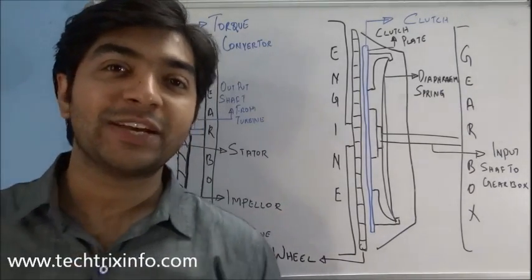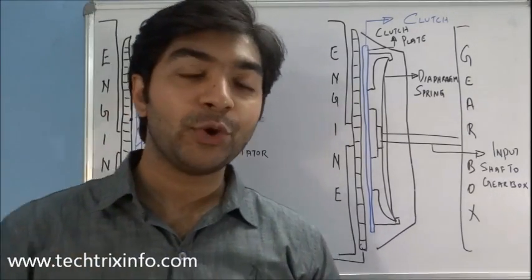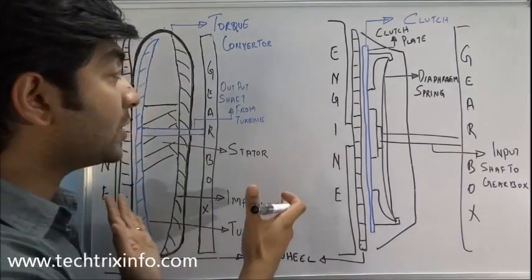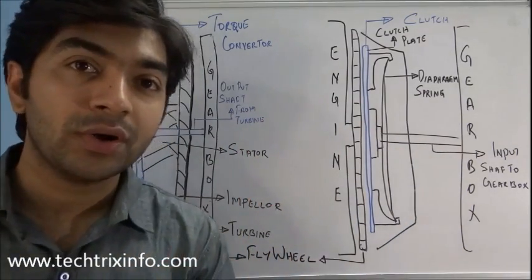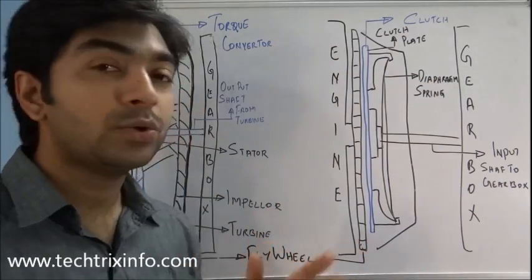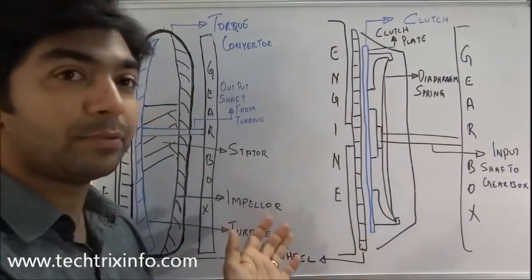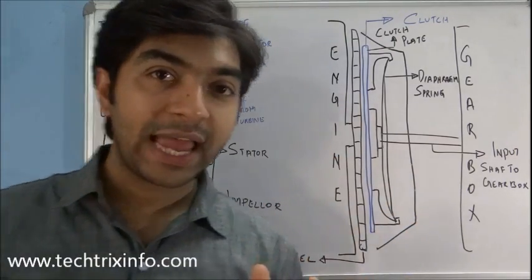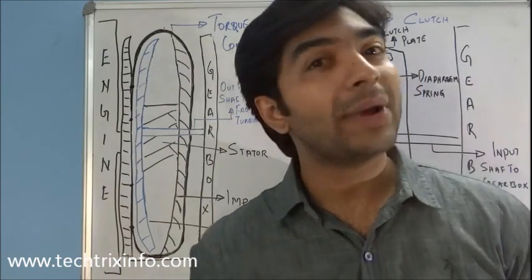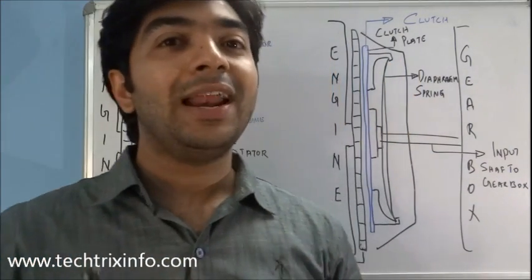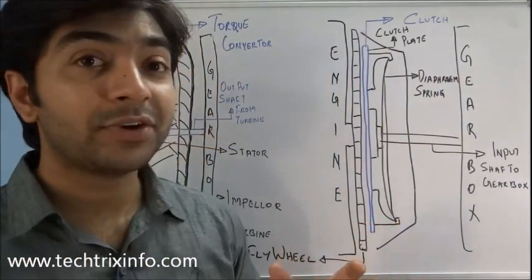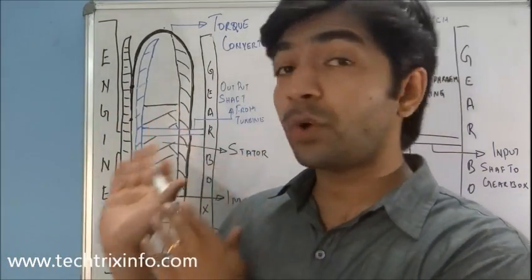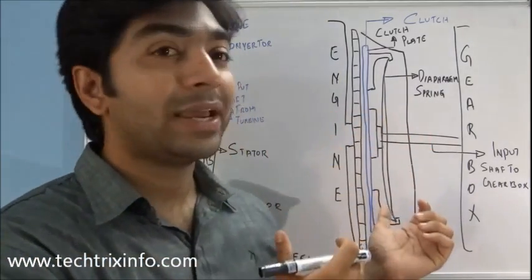Welcome back to Tech Tricks Info. Today we'll talk about the difference between a clutch and a torque converter. These are two different systems used in an automobile but for the same purpose. The clutch is used in manual transmission vehicles and the torque converter is used in automatic transmission vehicles. Let's see the difference between manual and automatic transmission and how the torque converter differs from a clutch.